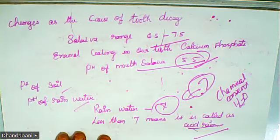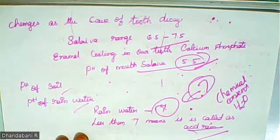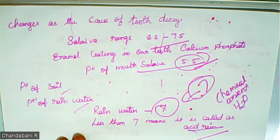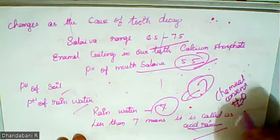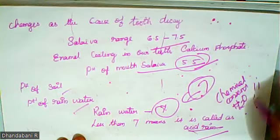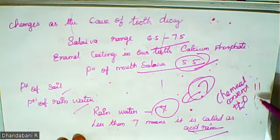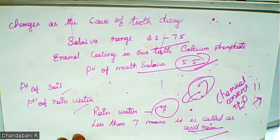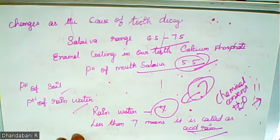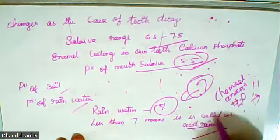How is rainwater converted to acid rain? Because of heavy smoke from factories and vehicles, we burn plastic materials, factory smoke, and vehicle exhaust — all of these have chemical content that enters the atmosphere and the air. That air mixes with rain, and rainwater changes into acid.